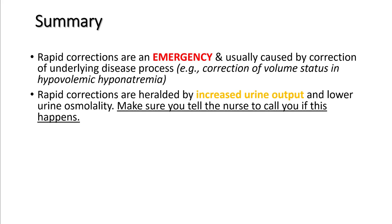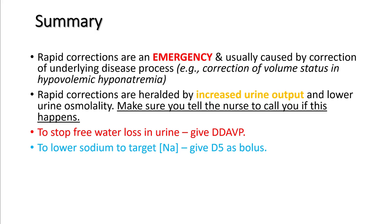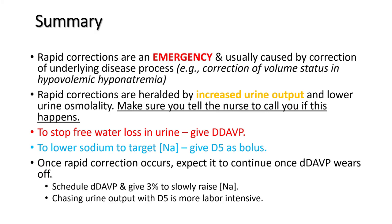In summary: rapid corrections are an emergency and are usually caused by correction of the underlying disease process. They are heralded by increased urine output and lower urine osmolality — make sure to tell the nurse to call you if this happens. The two principles to correct over-corrections are: stop free water loss in urine by giving DDAVP, and lower sodium to target by giving D5W as a bolus. Once rapid correction occurs, expect it to continue once DDAVP wears off, so schedule DDAVP every six hours and give three percent saline to slowly raise sodium. You can also chase urine output with D5W, though it is more labor intensive. Thank you.